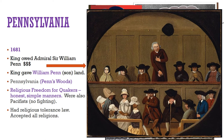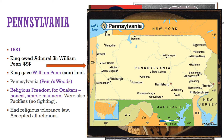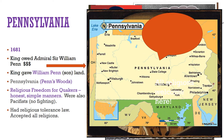Pennsylvania was a unique colony. It was unique because it had religious tolerance laws, making it legal, welcoming, and accepting of people of all religions to settle there.